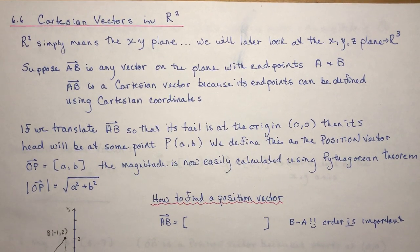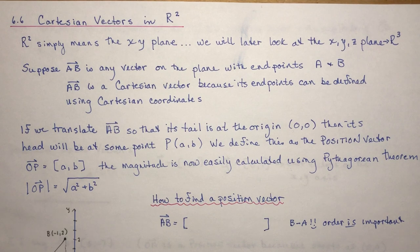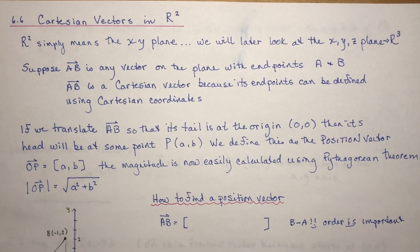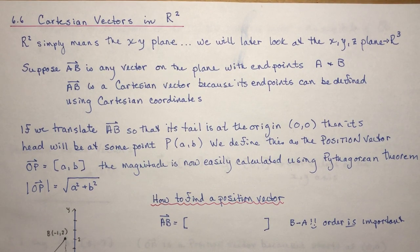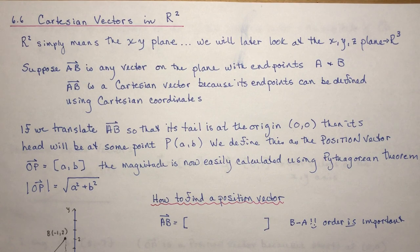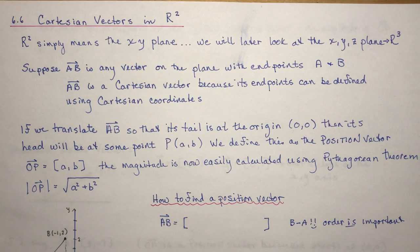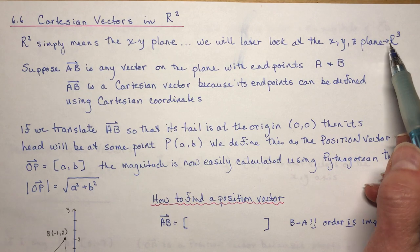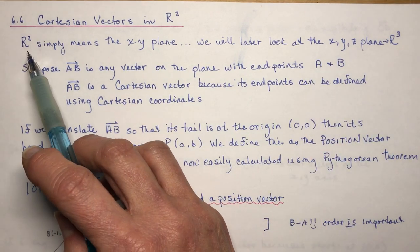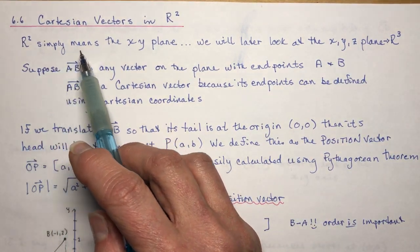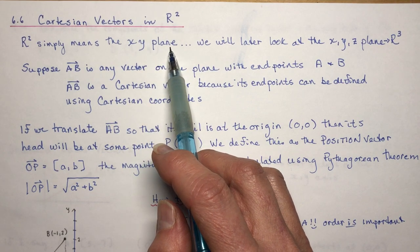6.6 is Cartesian vectors in R2. So you might be saying, what happened to 6.5? Well, we're going to leave that for later because a lot of teachers do it this way where they just focus on R2 and come back to R3 later. R3 is just basically a three-dimensional plane, so we try to keep it as simple as possible. We'll do the R2 plane, which is just a basic XY plane that you're familiar with.